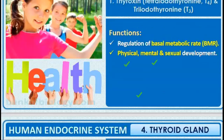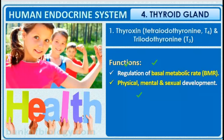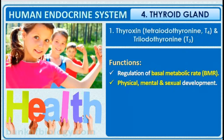Follicle cells of the thyroid gland secrete thyroxin (T4), triiodothyronine (T3), and thyrocalcitonin. Thyroxin is important for the regulation of the basal metabolic rate and for the physical, mental, and sexual development of a person. Iodine is very important for the thyroid gland — tetraiodothyronine and triiodothyronine both contain iodine, so iodine is essential for the proper functioning of the thyroid gland.